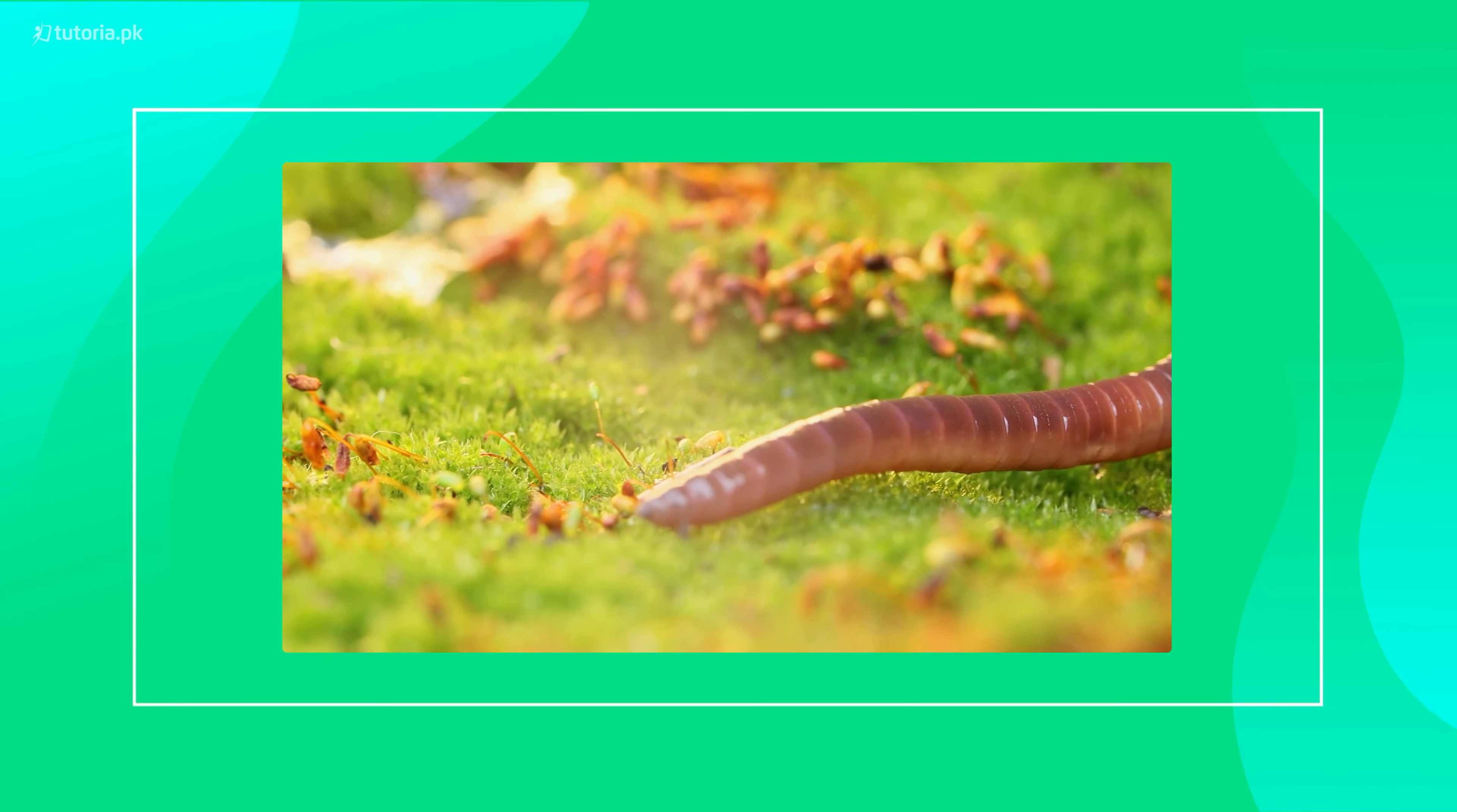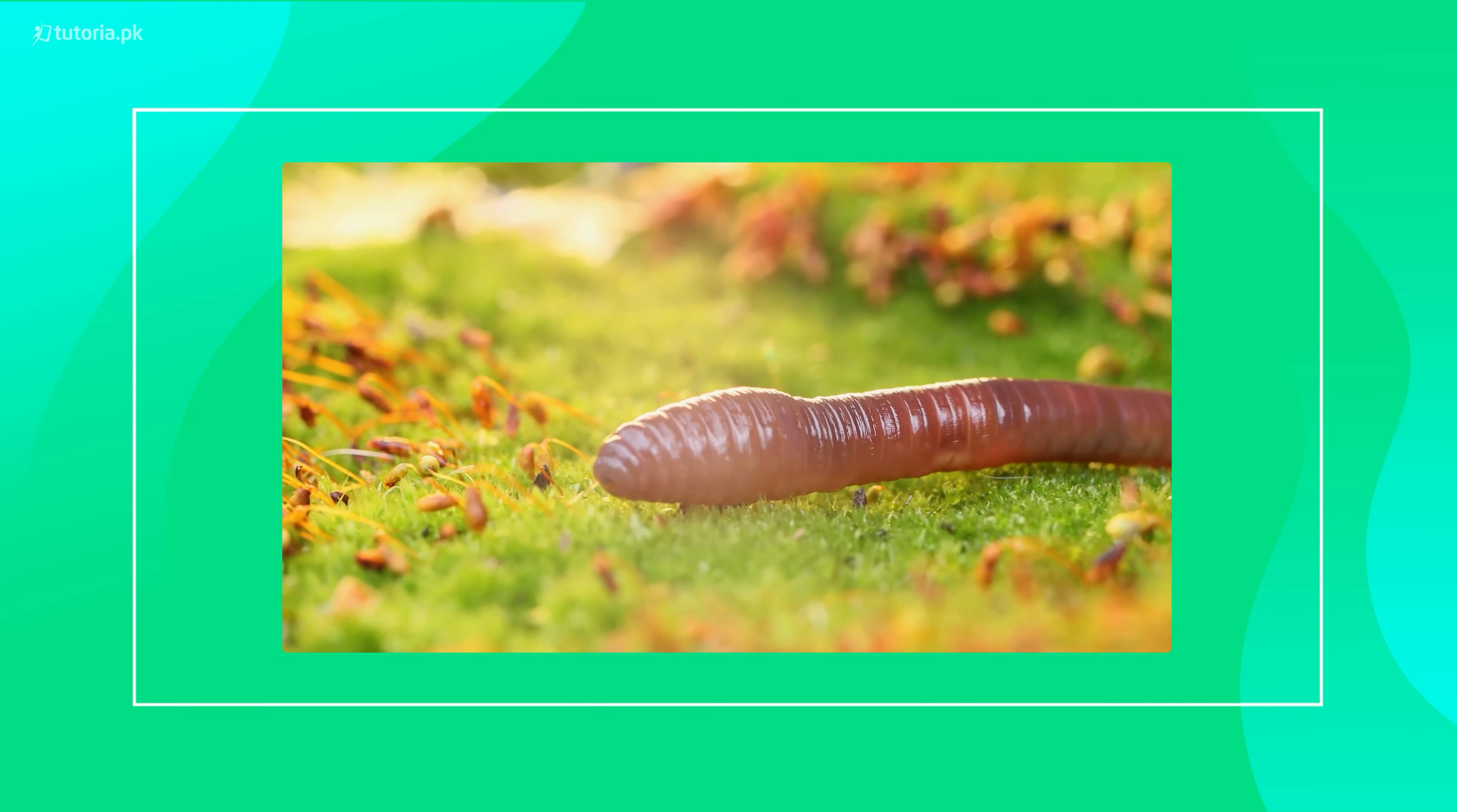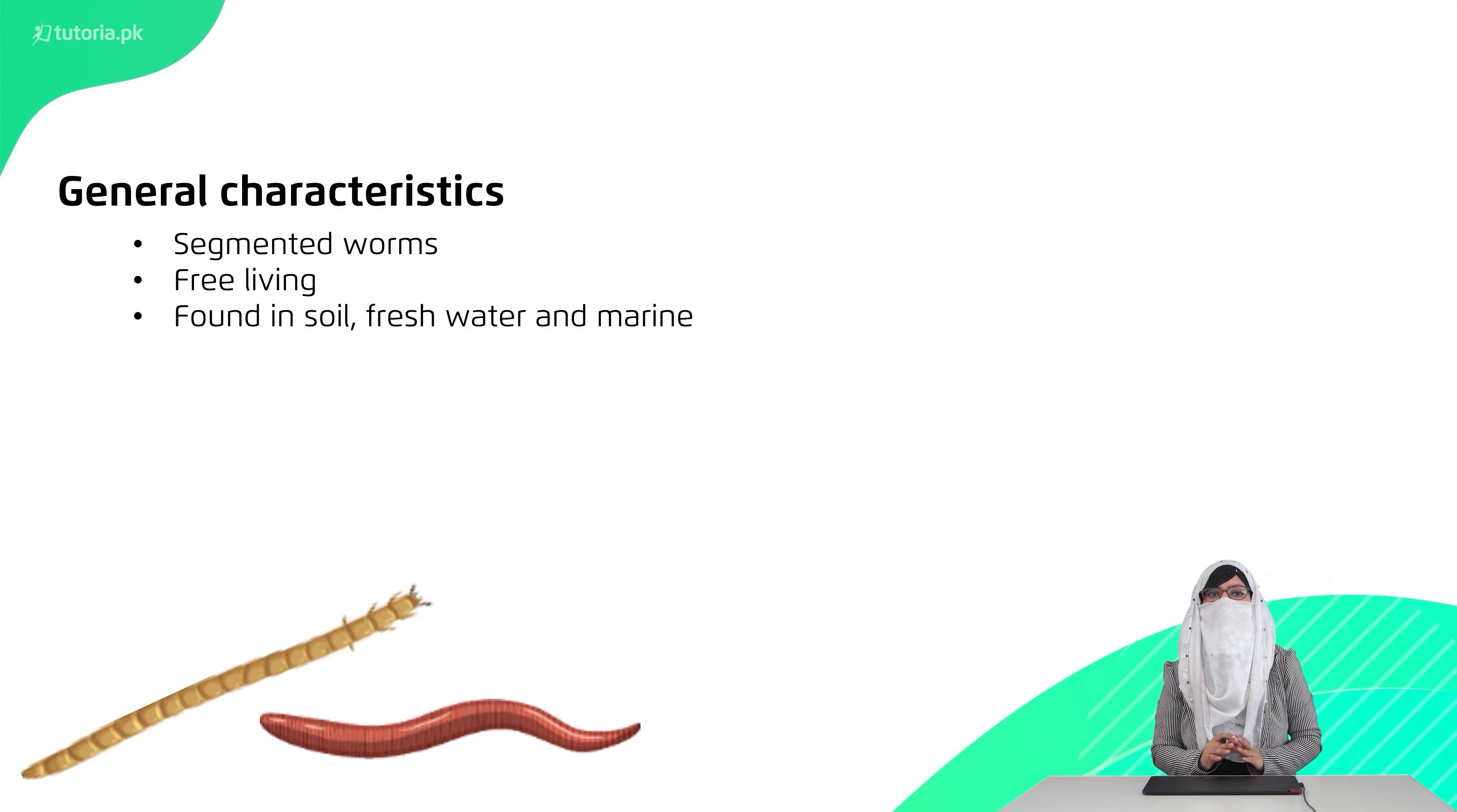Why do they call them segmented worms? You can see them in general characters. In their body, there are certain segments which we call metameres. These metameres are present in their body. They are present in free living and parasitic nature. They are present in soil, fresh water and marine.